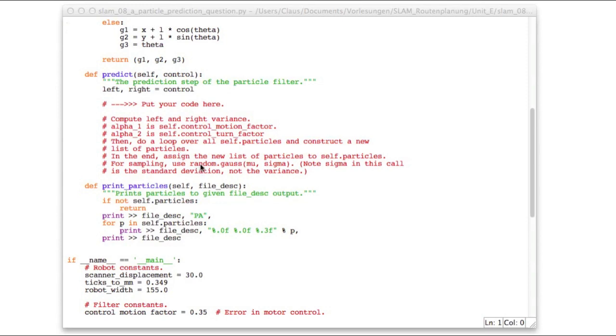And I've put some additional hints as comments here. In particular, take care if you call the function random gauss. It takes the standard deviation here as a second argument, and not the variance.